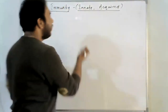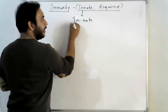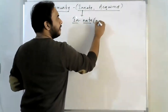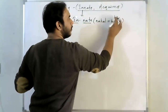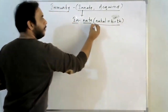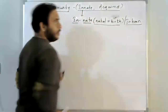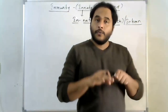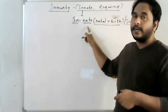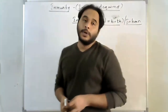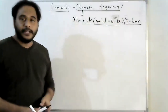The name 'innate' itself we can understand. 'Inn' means within, and 'nat' refers to natal, meaning birth — so innate means by birth. That is why innate immunity is called inborn immunity. By birth, we all get this immunity, and that's why this is called innate immunity.